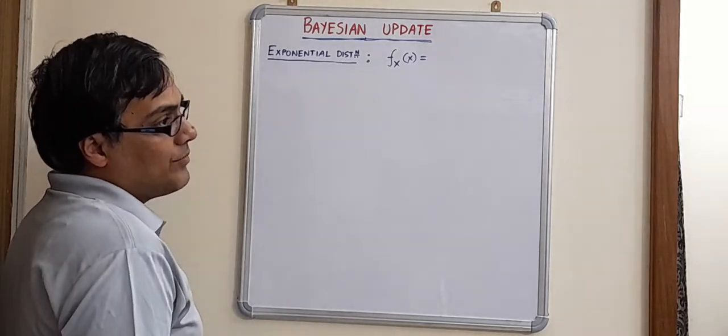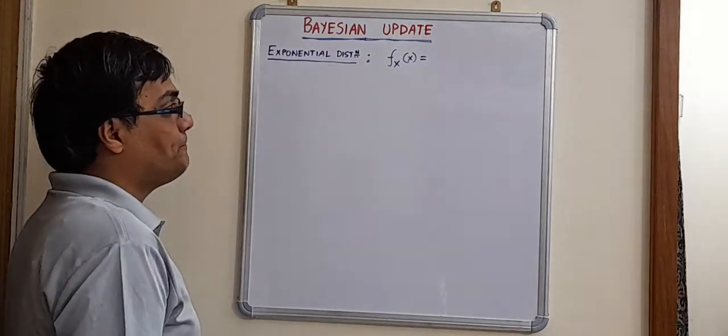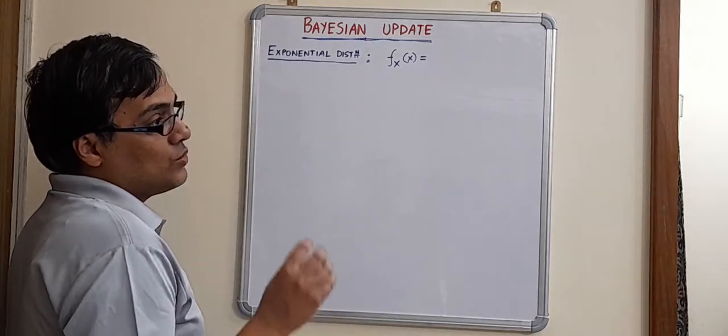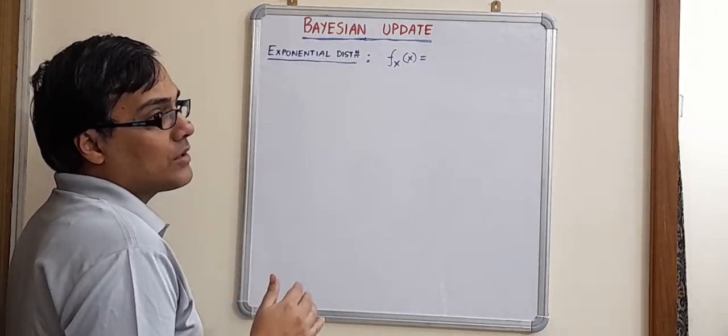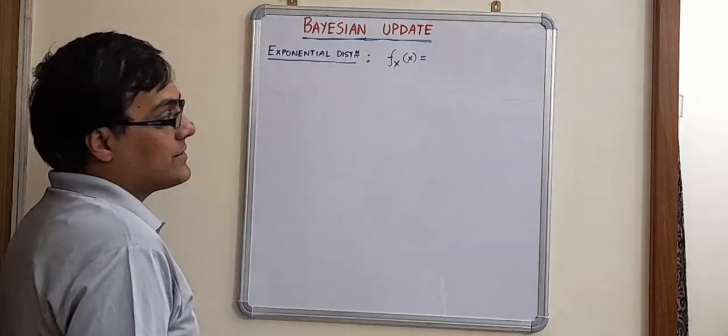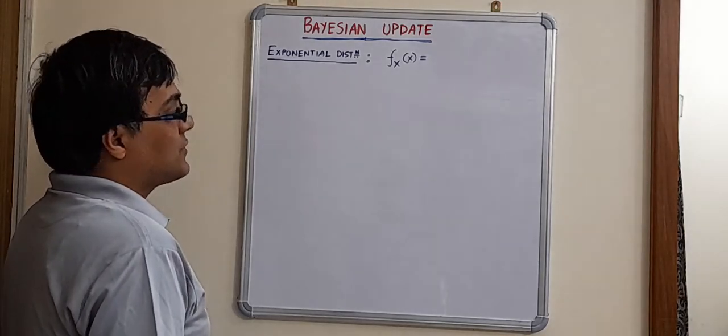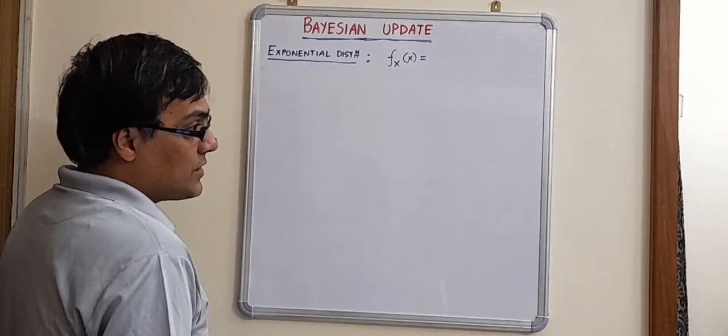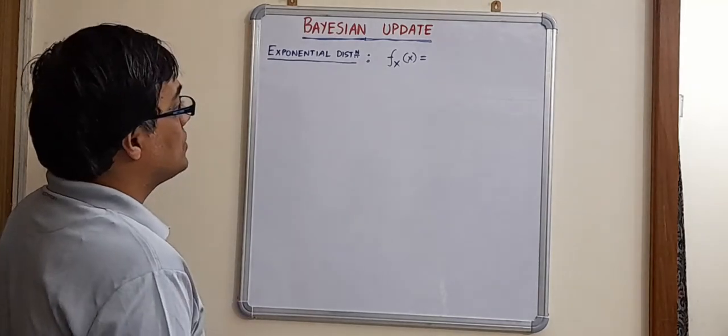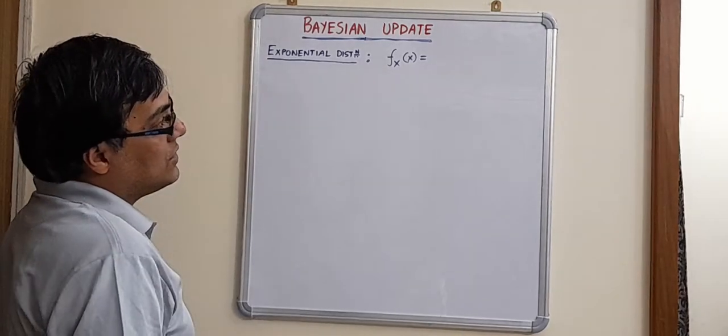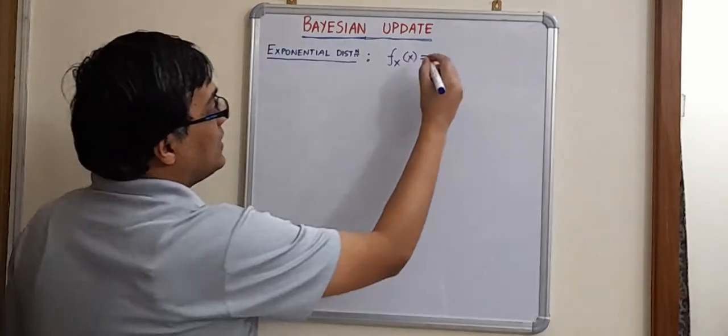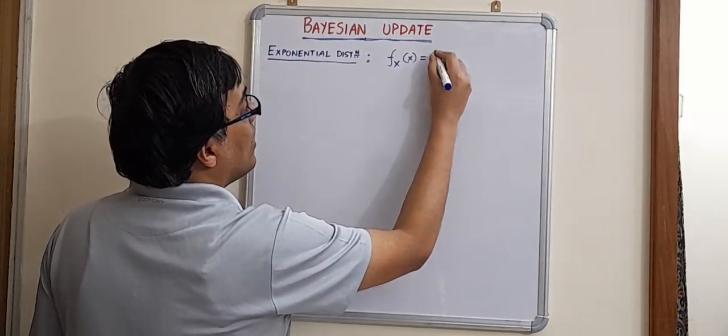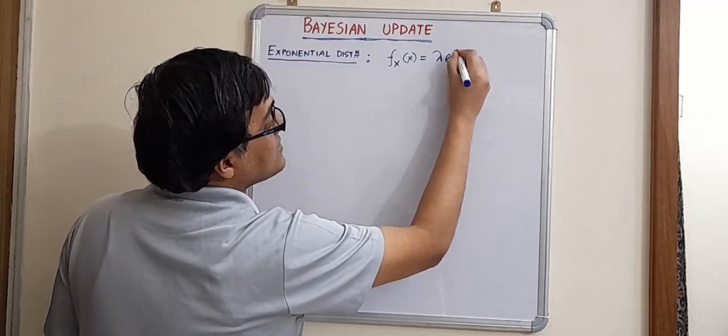I have given you a lot of material at one go. Here we will get into the details, bit by bit, at least through one or two examples. The first and probably the simplest example is that of exponential distribution, how to perform Bayesian updating for exponential distribution. For exponential distribution, let us start with the PDF. We know that the PDF is lambda e to the power minus lambda x.